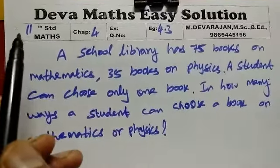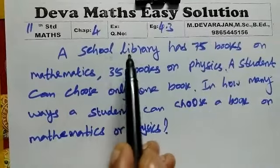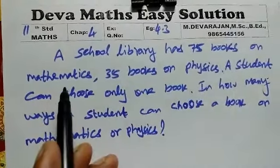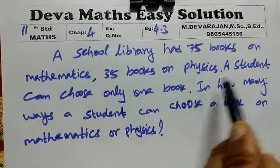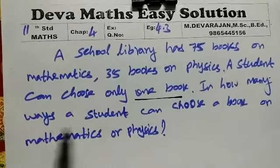Hi students, this is Deva. Now we are going to see Chapter 4 Example 4.3a. A school library has 75 books on mathematics, 35 books on physics. A student can choose only one book. In how